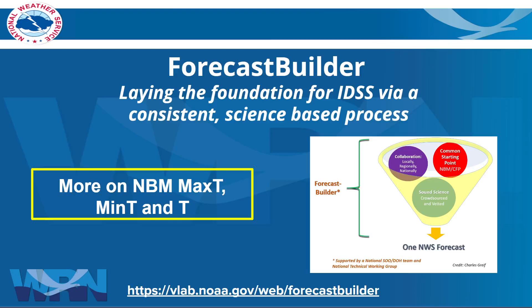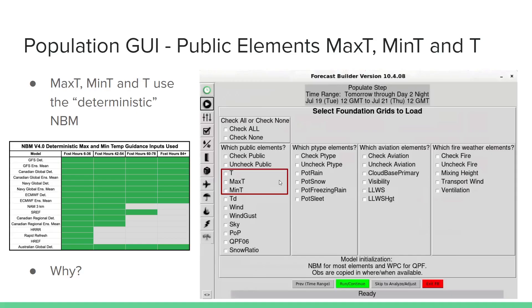Welcome to the module that takes a deeper look at the NBM max t, min t, and t methodologies and how it all works in forecast builder. From the population step, remember that the forecast builder uses the deterministic max t, min t, and t from the NBM. What is that and why?